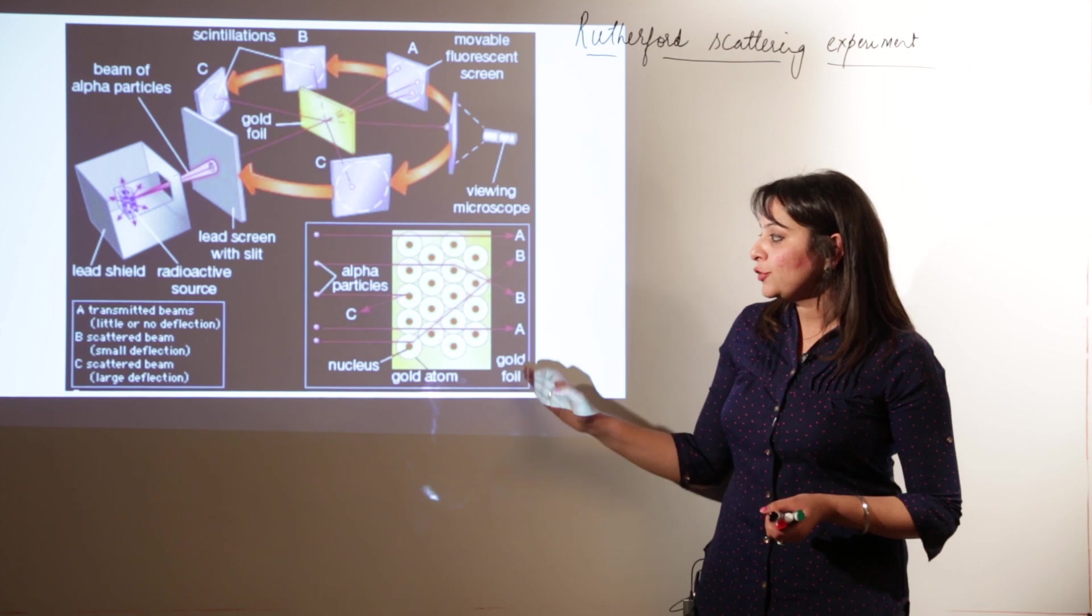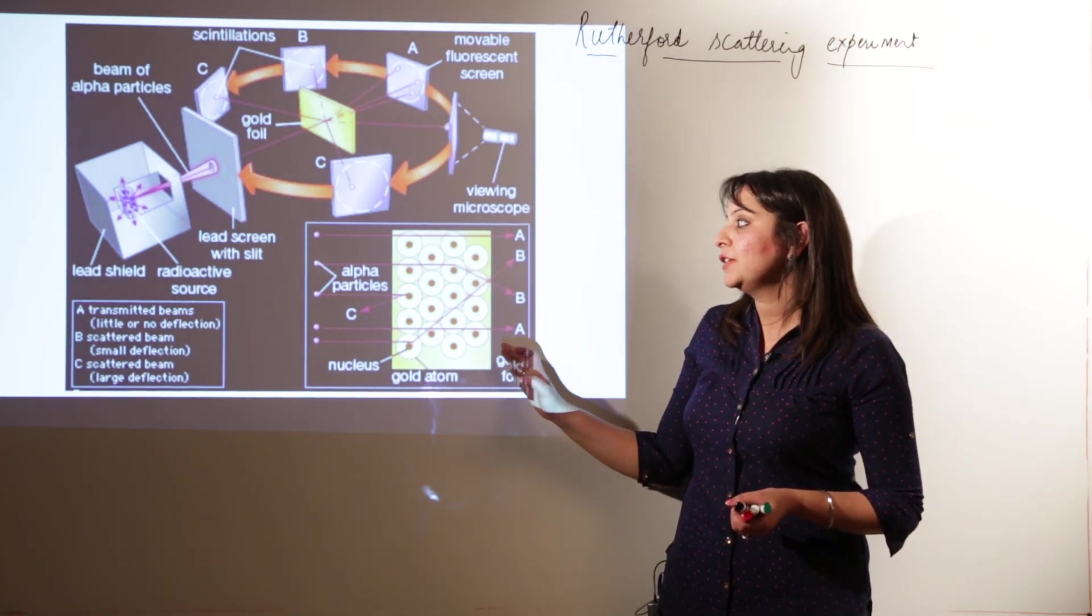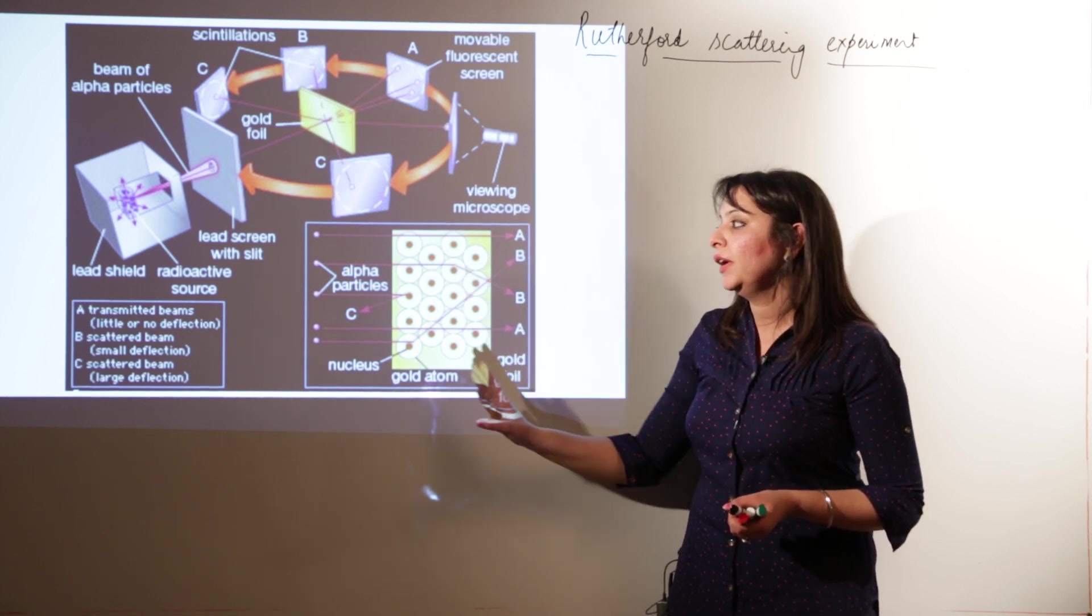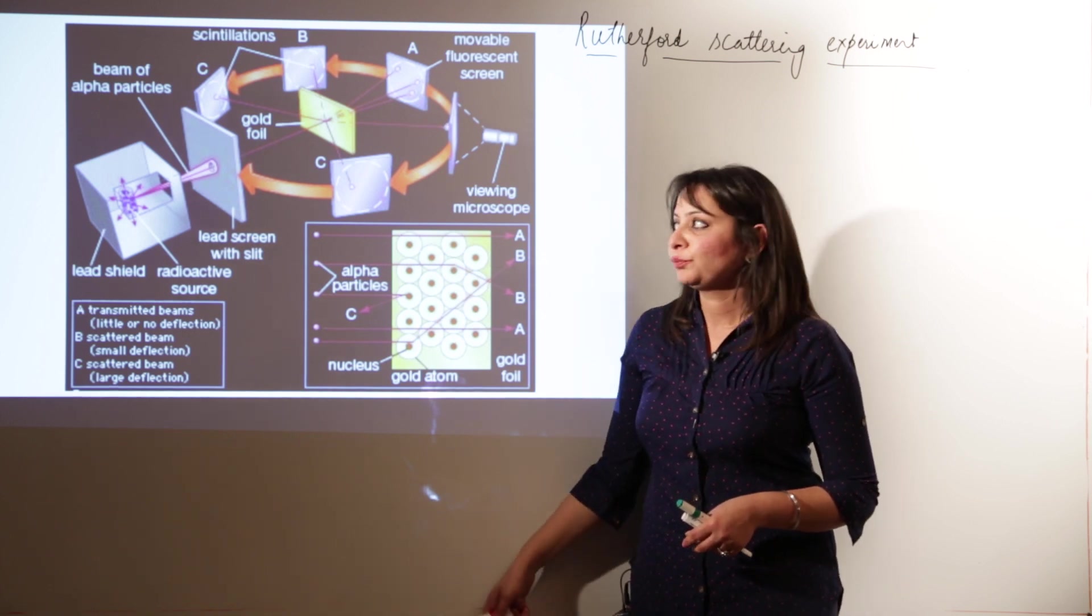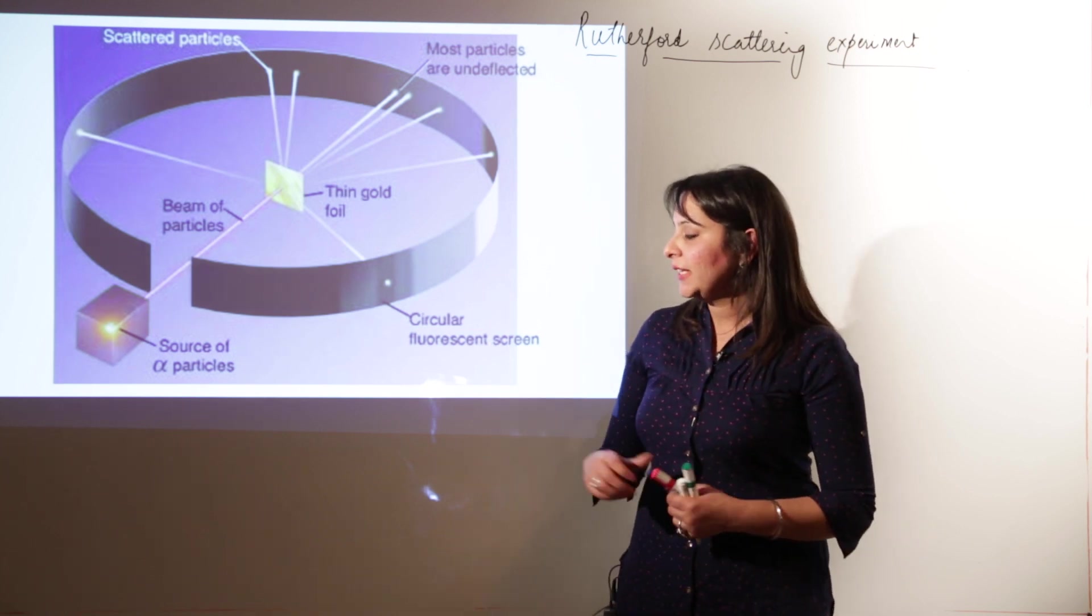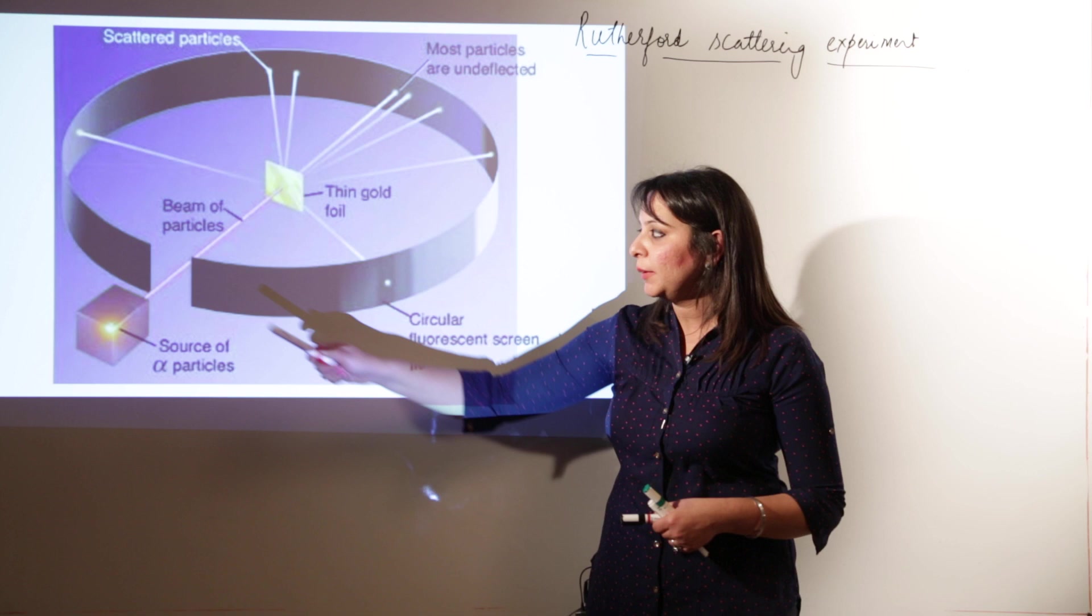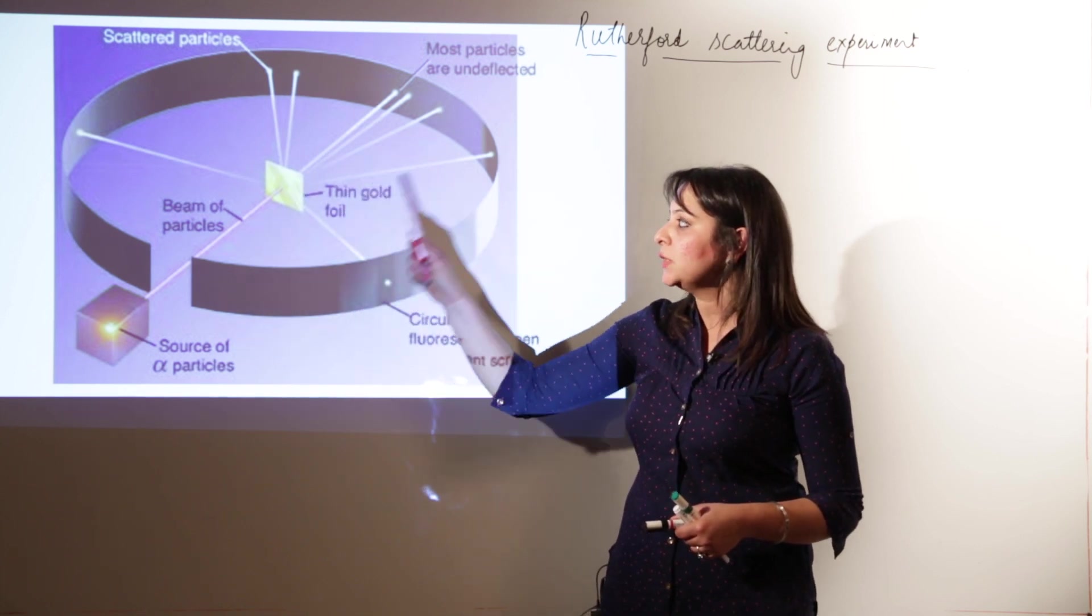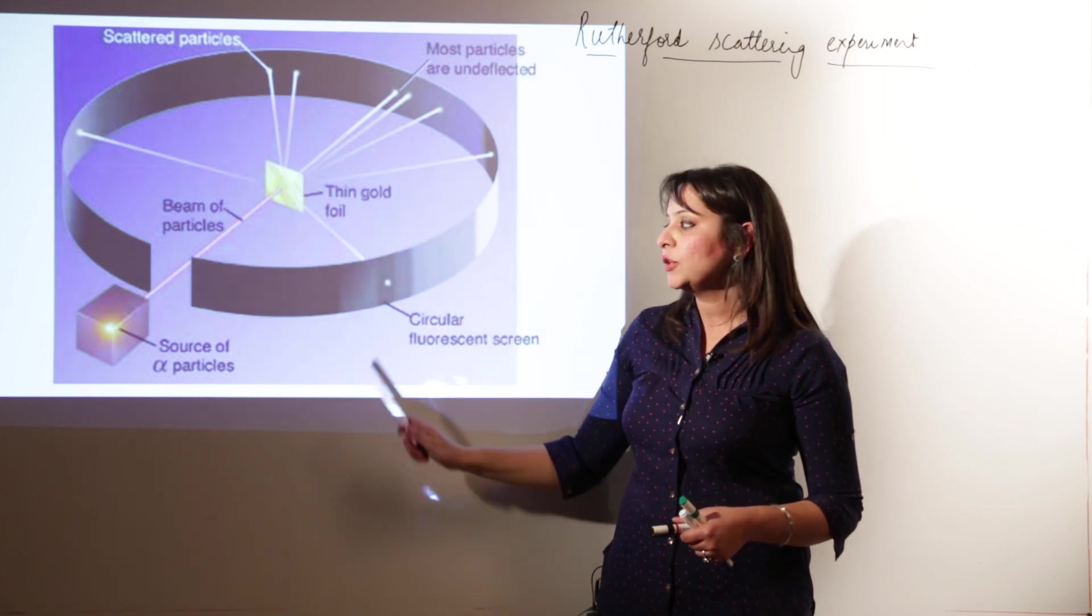And then this figure is showing the observation when he passed the alpha rays through the gold foil. On the atomic level what happened, this figure is showing it. See, the lead block, this is the alpha particle getting emitted. Thin foil, these are the deflections which are produced. This is the movable screen which is capturing those deflections.